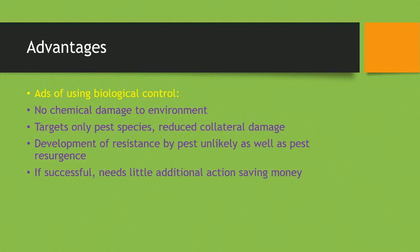There are advantages to using biological control. First, there is no chemical damage to the environment, and it usually only targets the pest species, reducing collateral damage. The development of resistance by the pest will be unlikely, as will pest resurgence. And if it's successful, you'll need little additional action, saving money.